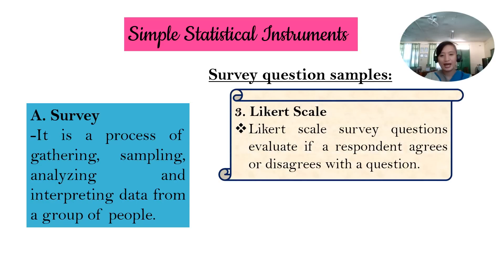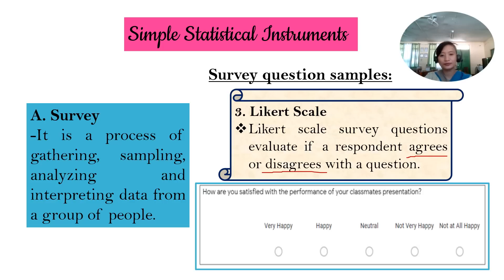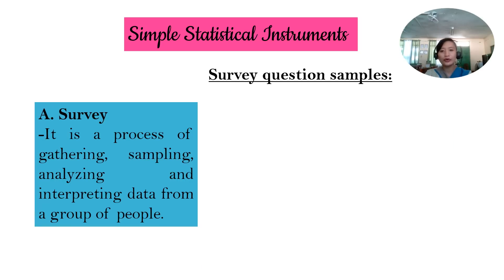Number three, we have Likert scale. A Likert scale survey or Likert scale survey questions evaluate if a respondent agrees or disagrees with a question. Here is an example. How are you satisfied with the performance of your classmates' presentation? Are you happy or not very happy? So you just have to select if you agree or not or if you are happy or not. So that is for Likert scale.